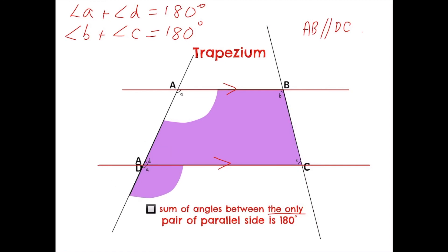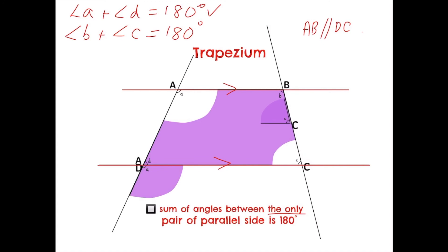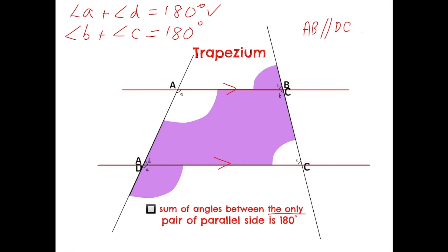That is proven correct. Now let's try the other pair. We slide angle C upwards, and similarly it forms a straight line, indicating that both angles add up to 180 degrees. So again, it's proven.